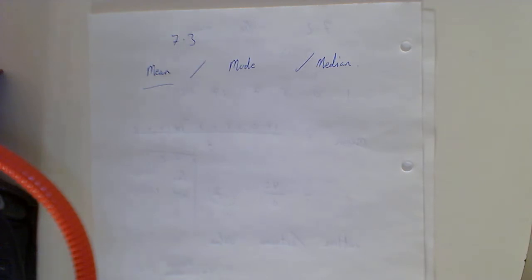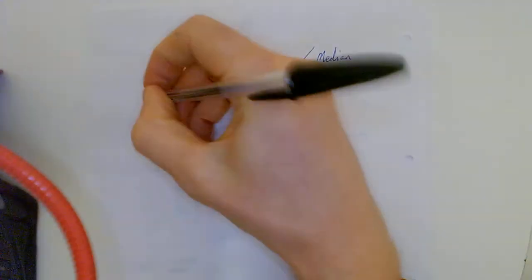Now this is traditionally what we use as average. Well there's average test scores in your class. Devon got 30 plus 40 plus 70 plus 36, and divide by the number of people in class. That's great when there is no outliers.